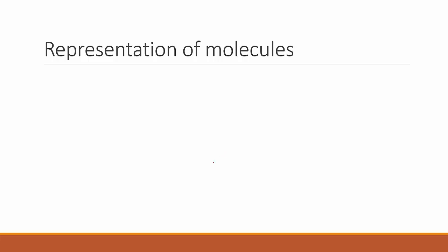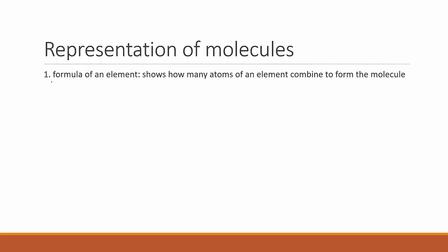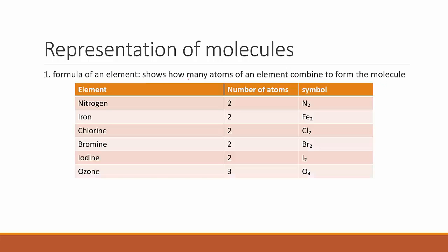Now let's see the representation of molecules. A formula of an element shows how many atoms of that particular element combine to form the molecule — it tells us how many members are in that group. For example, to form one molecule of nitrogen, two atoms come in, so we represent it as N2.